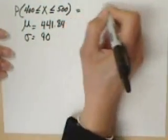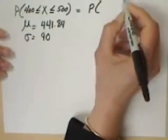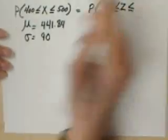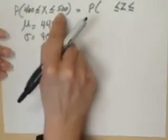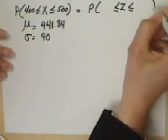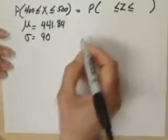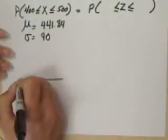We need to convert this to a Z distribution where we can define X to be a Z variable and be able to define the $400 and $500 in Z terms. So in order to do that, we're going to draw our normal curve.